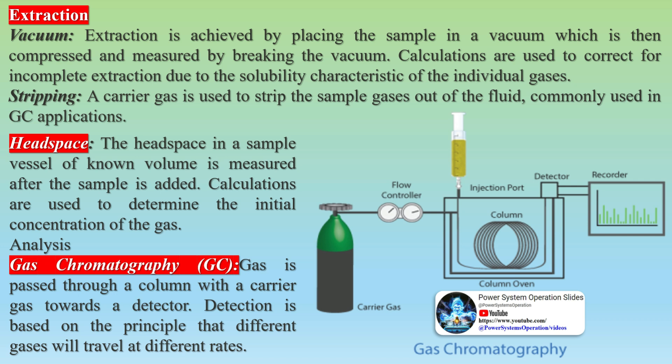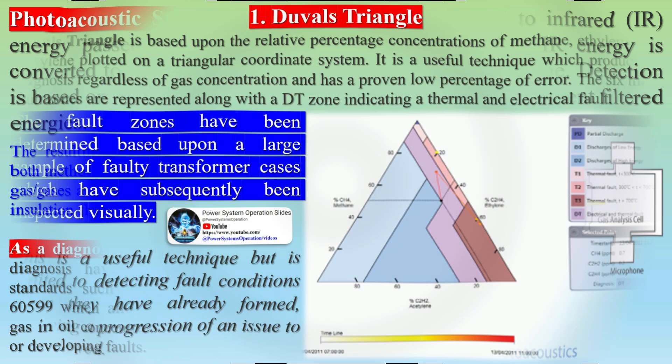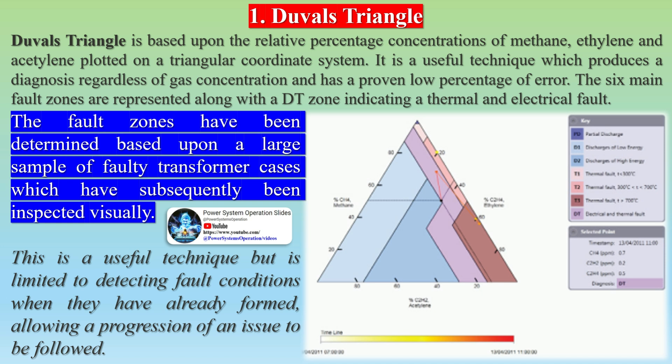For analysis, Gas Chromatography (GC) passes gas through a column with a carrier gas towards a detector; detection is based on the principle that different gases travel at different rates. Photoacoustic Spectroscopy (PAS) exposes gas to infrared (IR) energy passed through a selected filter; the absorbed IR energy is converted to sound, recorded via a microphone, based on the principle that different gases absorb different filtered energies. The resulting signature profiles from both methods identify specific gases and their concentrations in the insulation fluid.